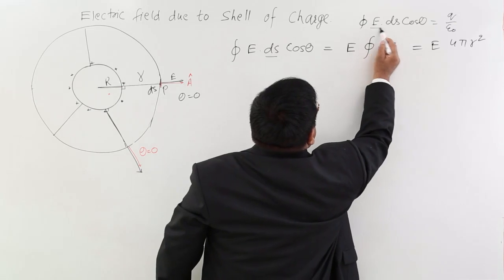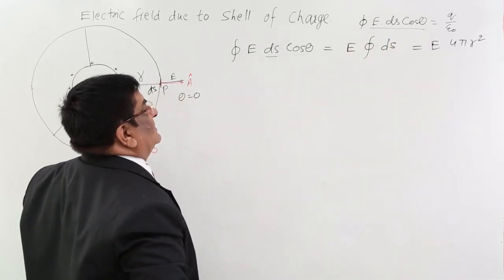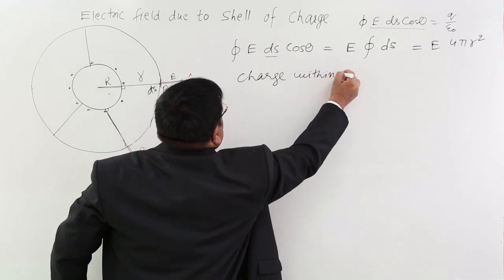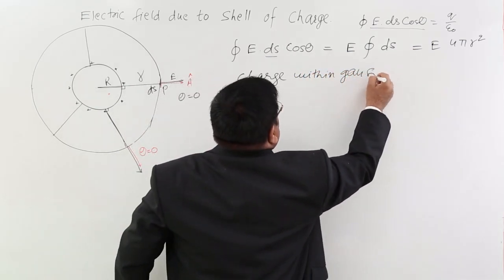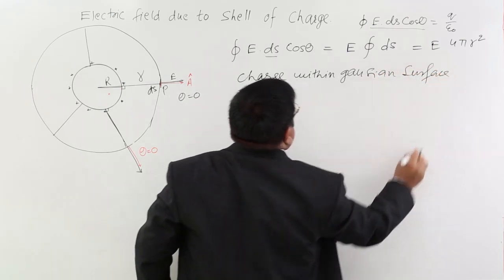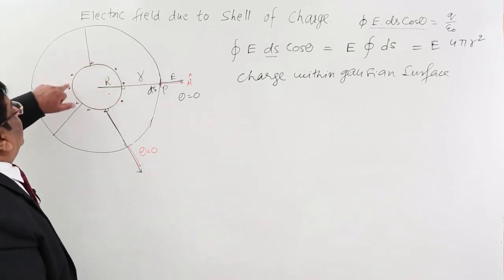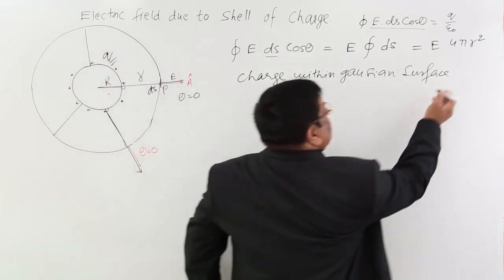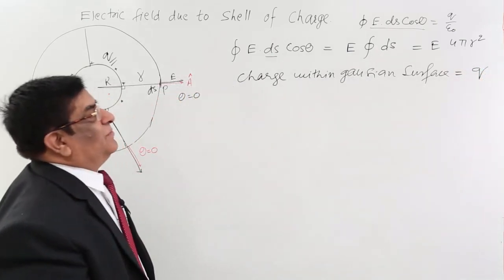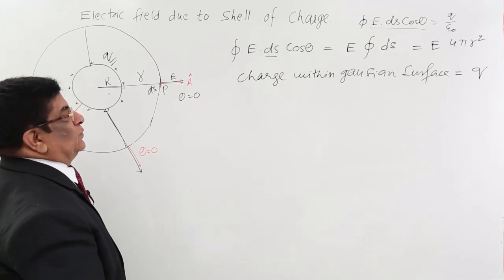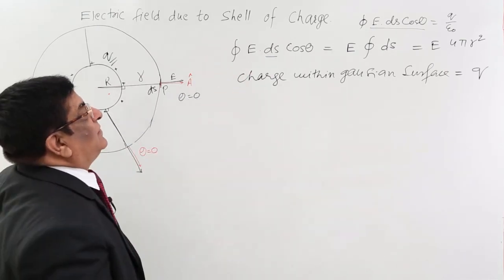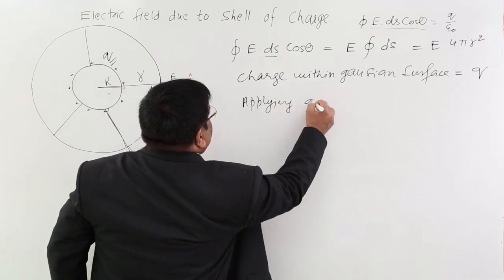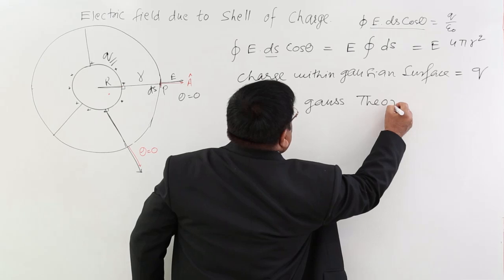Now we have to calculate how much charge is within the Gaussian surface. The charge within the Gaussian surface is simply Q — total charge within the Gaussian surface is Q, nothing more to calculate. We have taken the values of both and now it is time for the fourth step: applying Gauss's theorem.